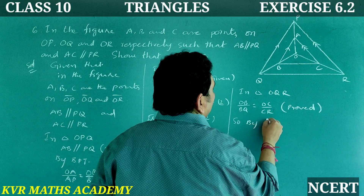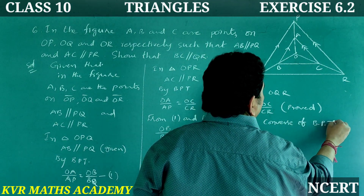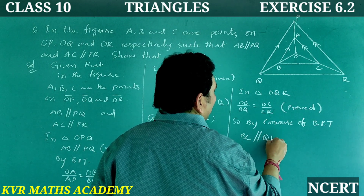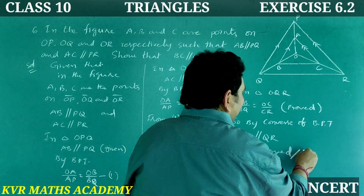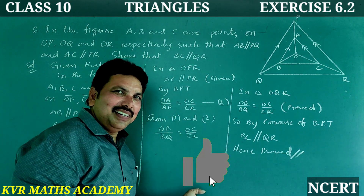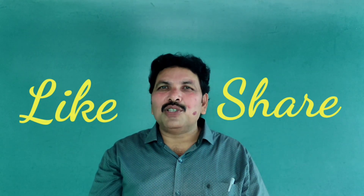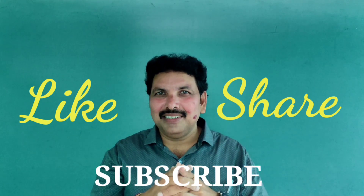So by the Converse of the Basic Proportionality Theorem, BC is parallel to QR. Hence proved. Is it clear? Note it down. Okay viewers, if you like this video, please like, share, and watch the video. Subscribe to my channel. Thank you very much.